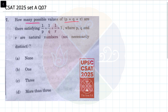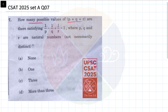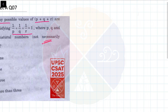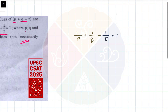We are looking for how many different possible values of P plus Q plus R satisfy this condition, where P, Q, and R are natural numbers, not necessarily distinct — they can repeat. We are looking for the cases where 1/P plus 1/Q plus 1/R equals 1.